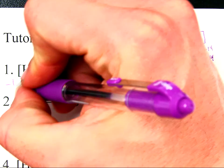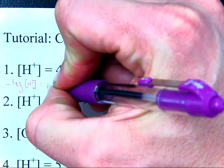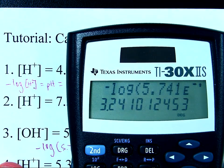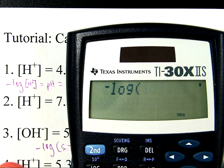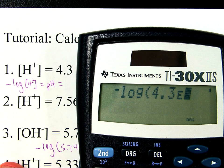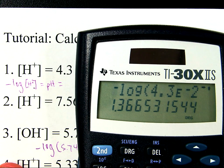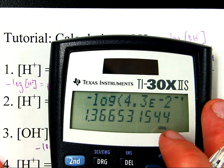So, negative log of hydrogen ion concentration is going to give me the pH. Which, in this case, is going to be equal to, let's have a look, negative log of 4.3 times 10 to the negative two gives me that for a pH. So, let's, two sig figs, we'll call it two sig figs, 1.4.